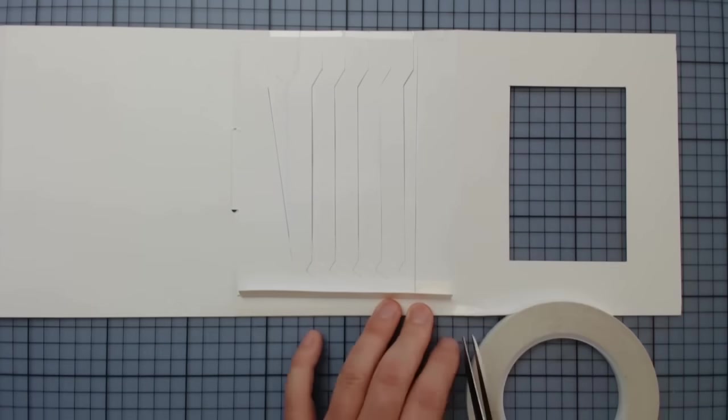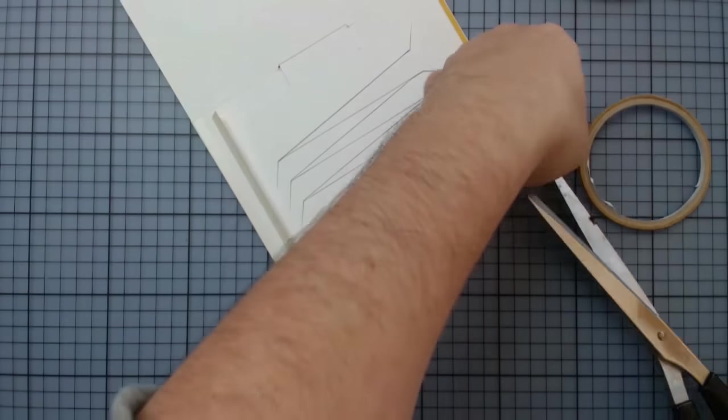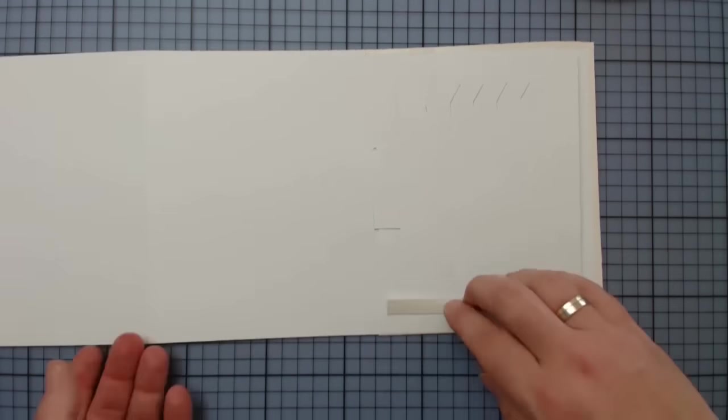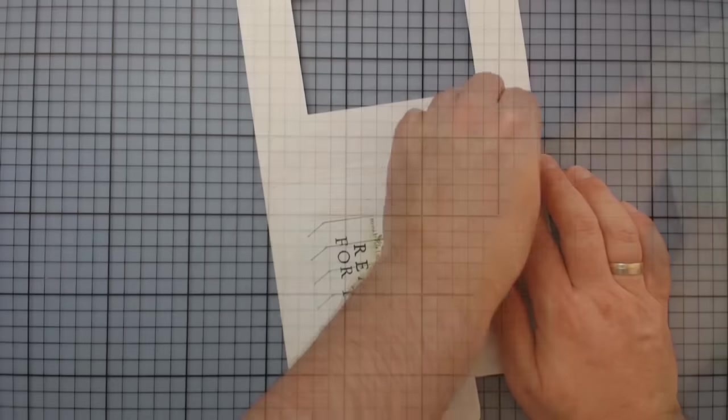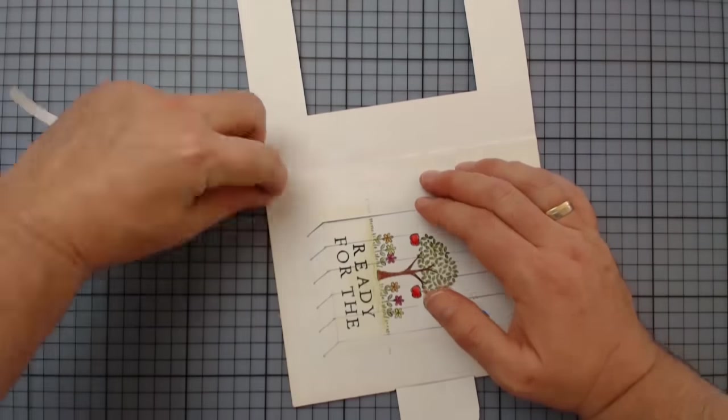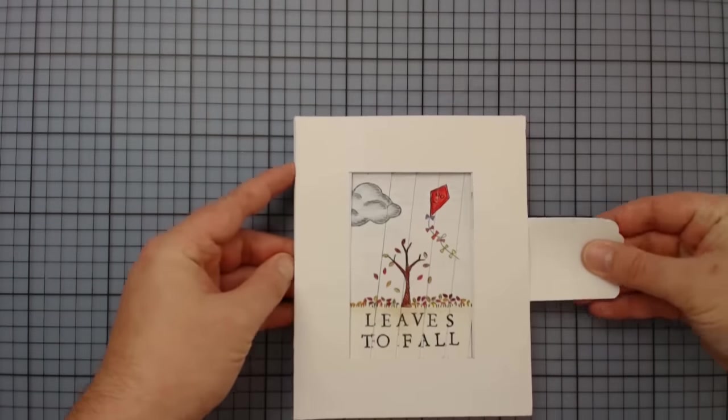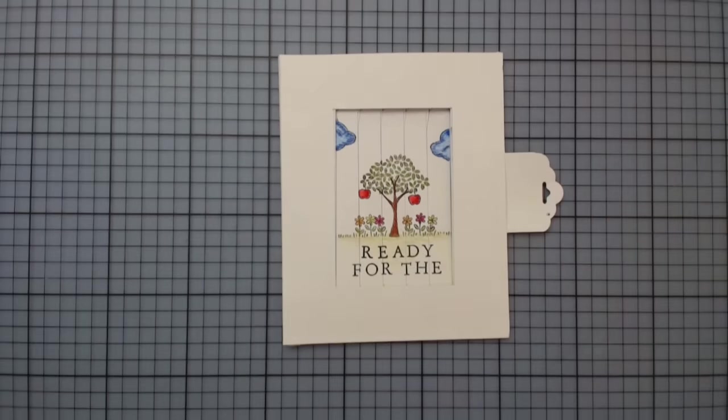Now we are closing the inside by using double sided tape again. But be careful and use small tape because otherwise the picture on the moving piece cannot be fully shown. The frame on the front will now also be adhered and thereby cover the sliding mechanism on the top and the bottom.